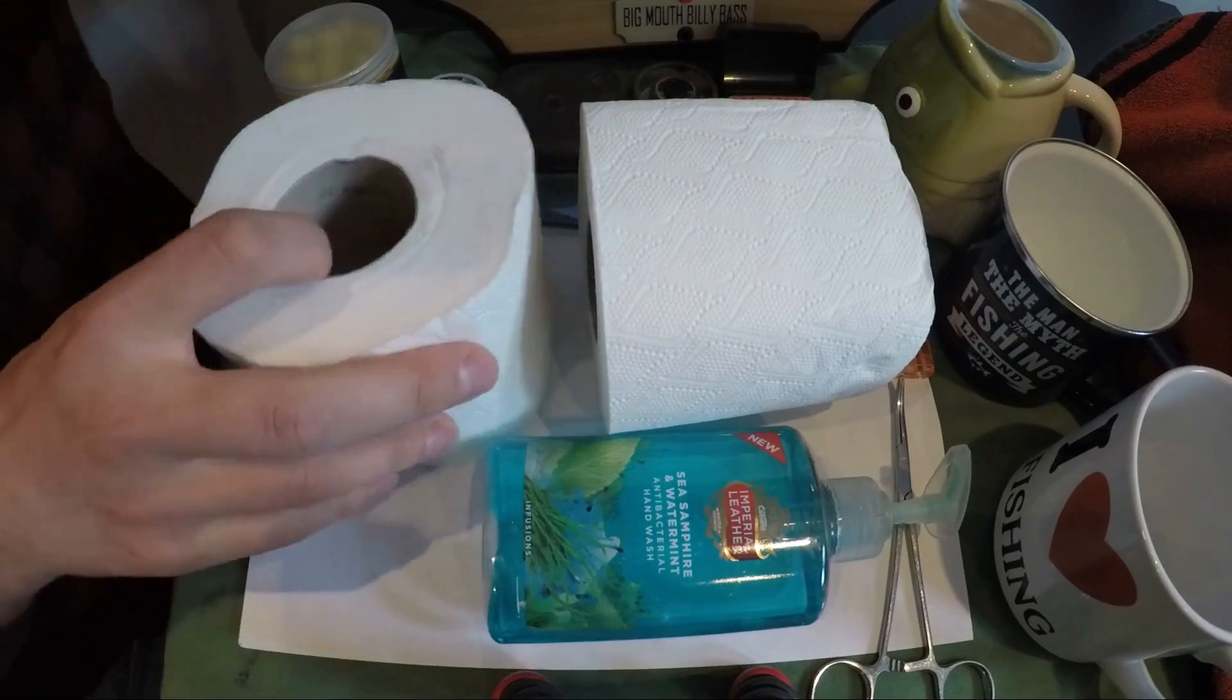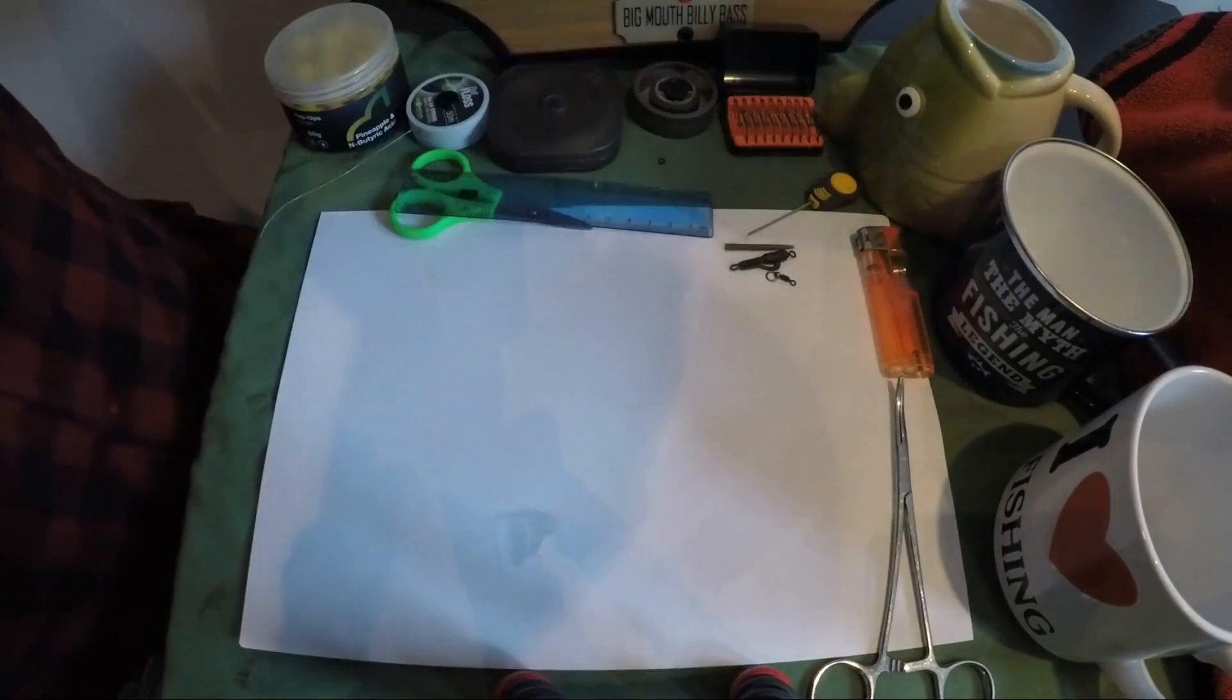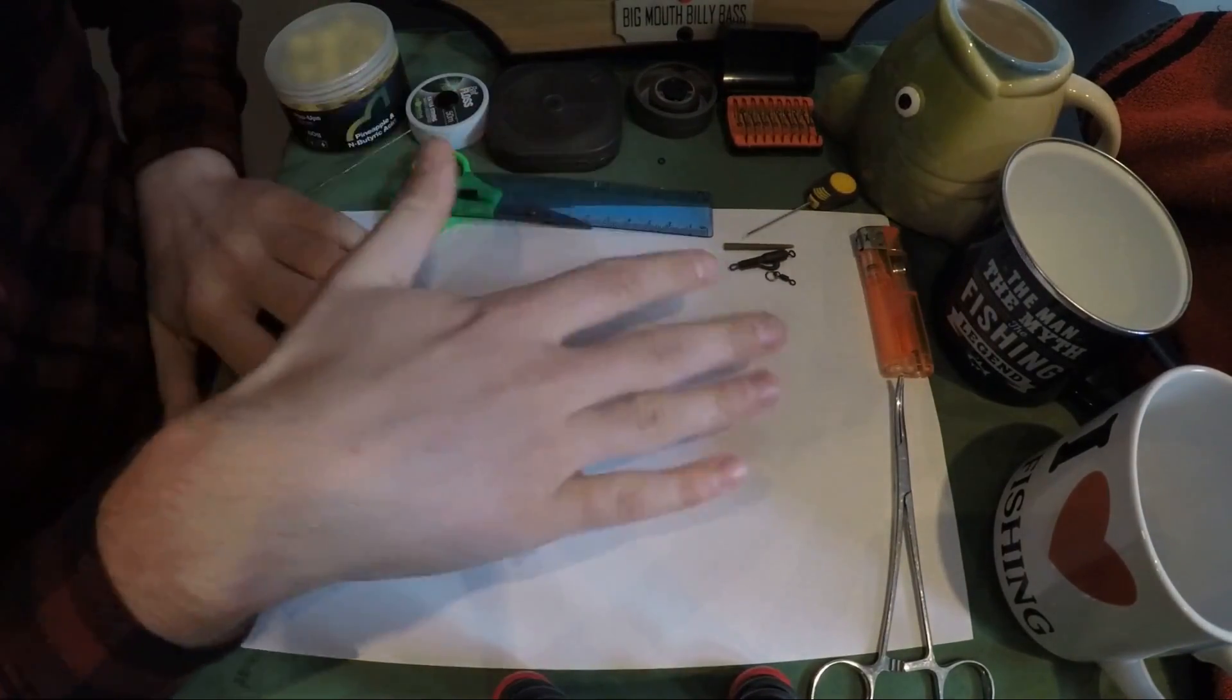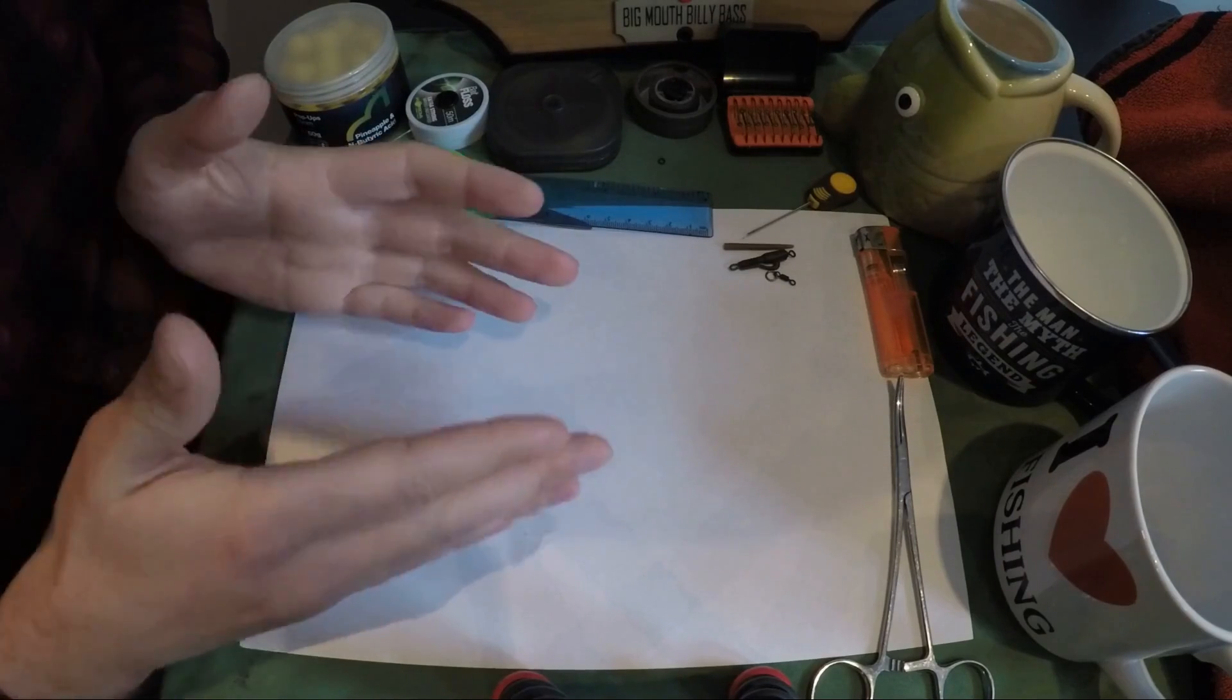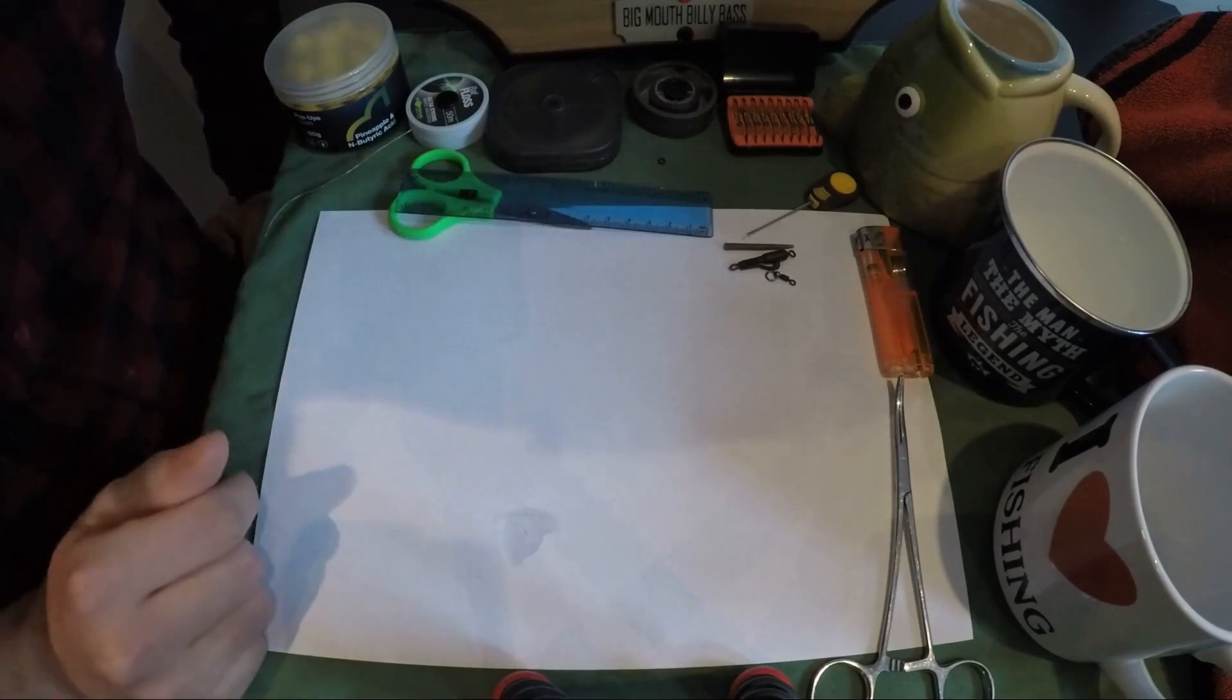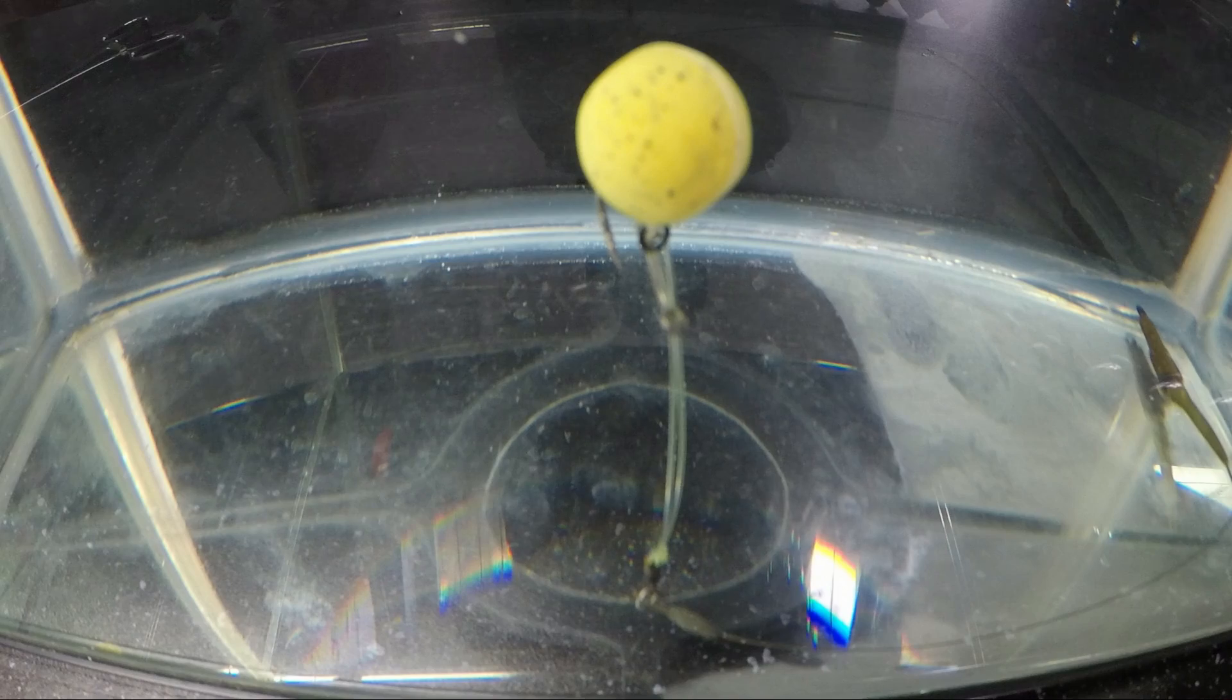So let's get started on the rig now. We'll just move these out of the way. So to tie the rig, I've got all the components and things here. Rather than go through them now, which might be a little bit boring, I'll just list them in the description below. We're going to start with the hook section first.